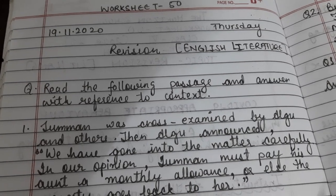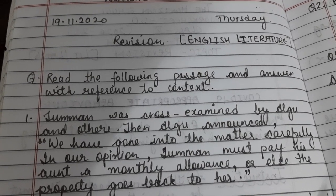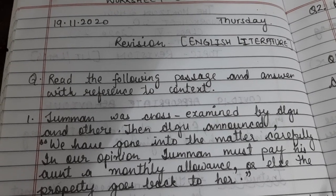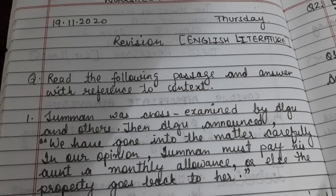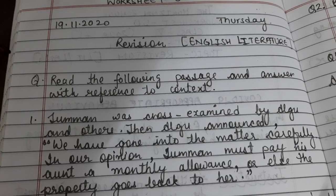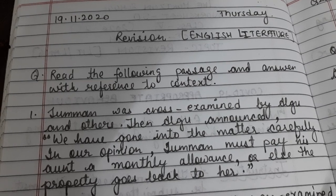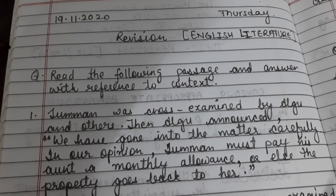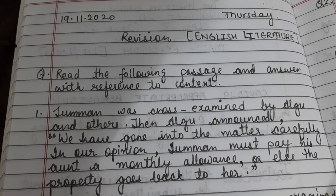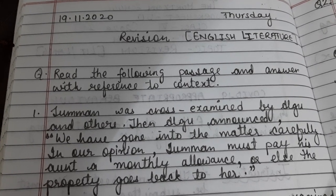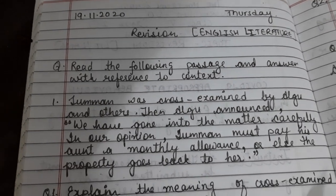Here I am giving you only the revision of Reference to Context, because this is the only part which is new for you right now. For the rest, you need to learn the answers, understand the questions properly, learn word meanings, and learn how to make sentences. Overall, you need to read the chapter thoroughly two or three times to understand it so that you can attempt the English Literature paper very well.